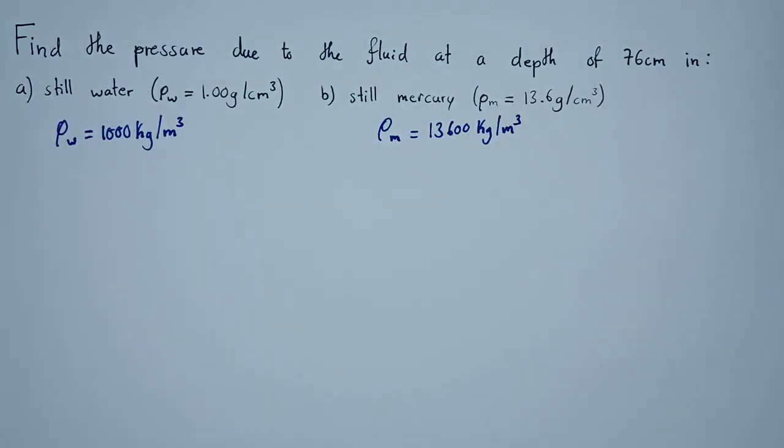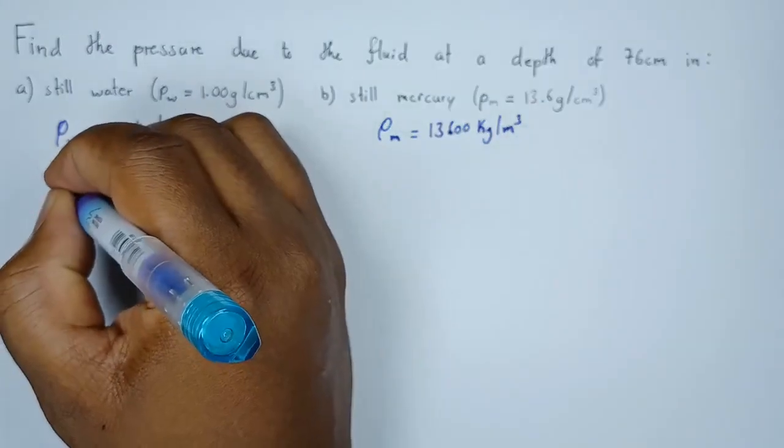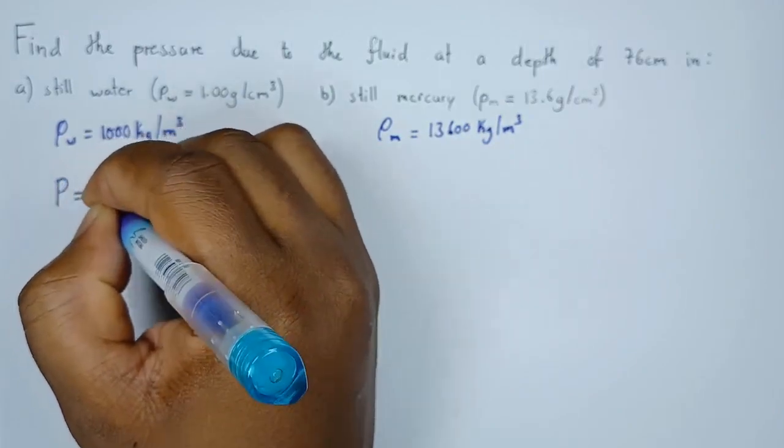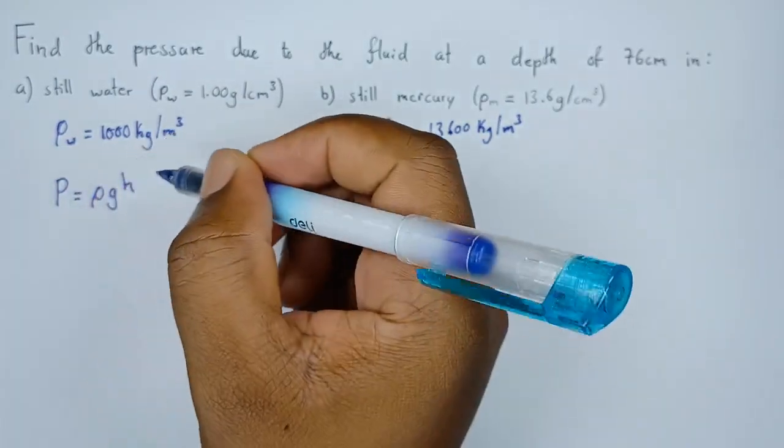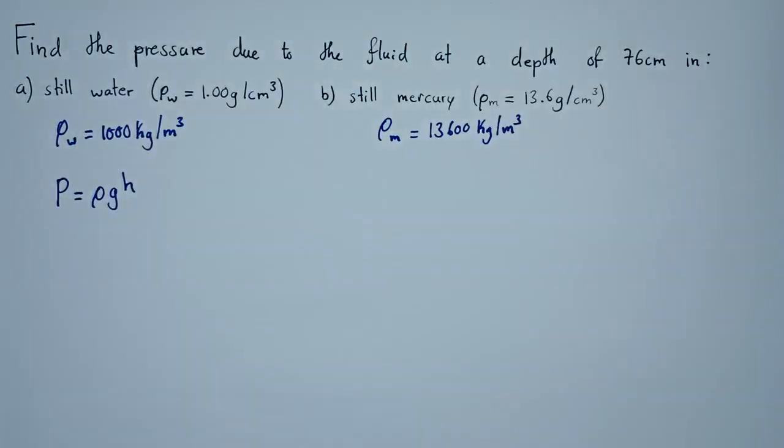We know that pressure is given by the formula ρgh. So to find the pressure, pressure equals ρgh where ρ is the density, g is the acceleration due to gravity, and h is the height.